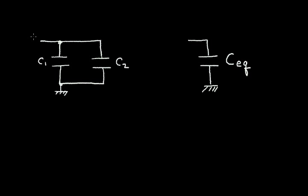On the left side, I have two capacitors connected in parallel, C1 and C2. I want to replace these two capacitors with one equivalent capacitor that I'm calling C sub EQ.